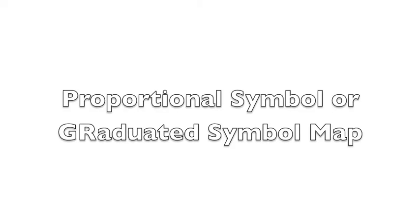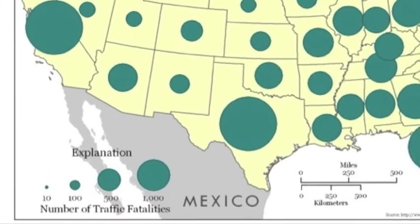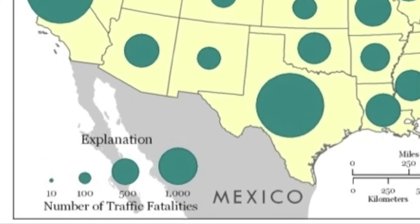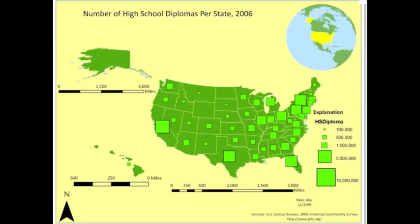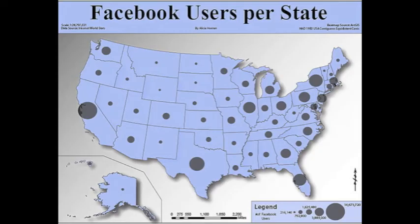The last type of quantitative thematic map is the proportional symbol or graduated symbol map. On these maps, the selected symbol size varies in proportion to the quantities the symbol represents. The symbol can be customized using different colors, patterns, and symbols. The strengths of these maps are that they give you the where and the how much. The weakness is that they're less exact than dot distribution maps and can also be difficult to make.